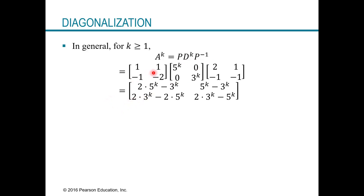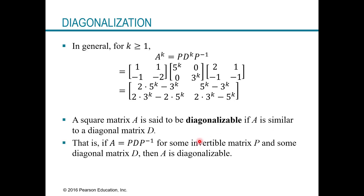For the example, A to the K equals P times D to the K times P inverse — with D raised to the K power, P on the left, and P inverse on the right. A squared matrix is said to be diagonalizable — this is a definition — if it is similar to a diagonal matrix D. In other words, A equals P times D times P inverse for some invertible matrix P and some diagonal matrix D.